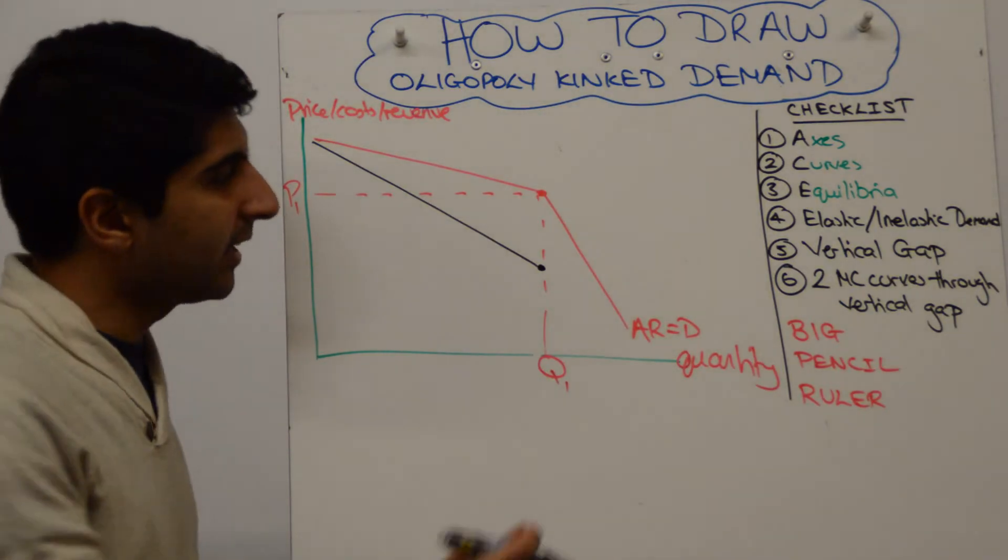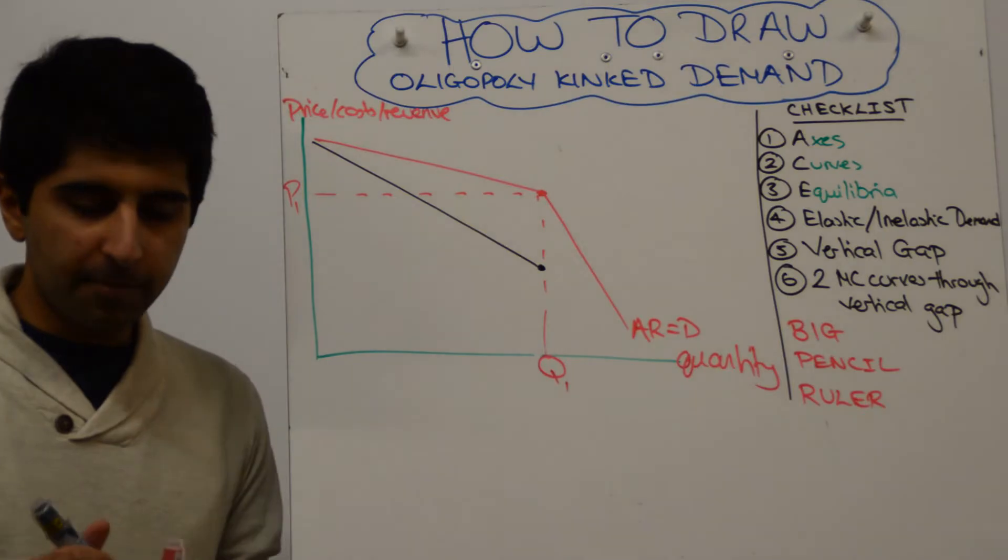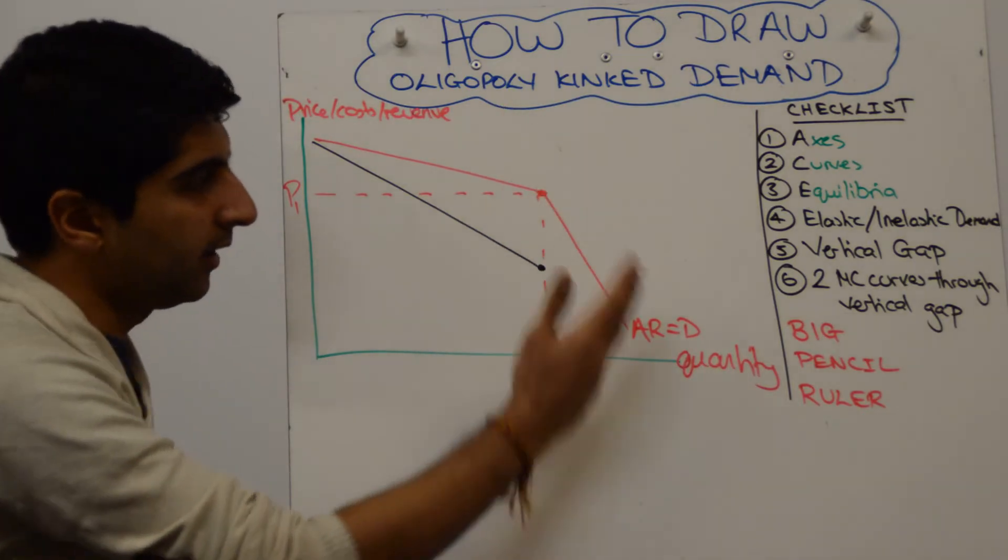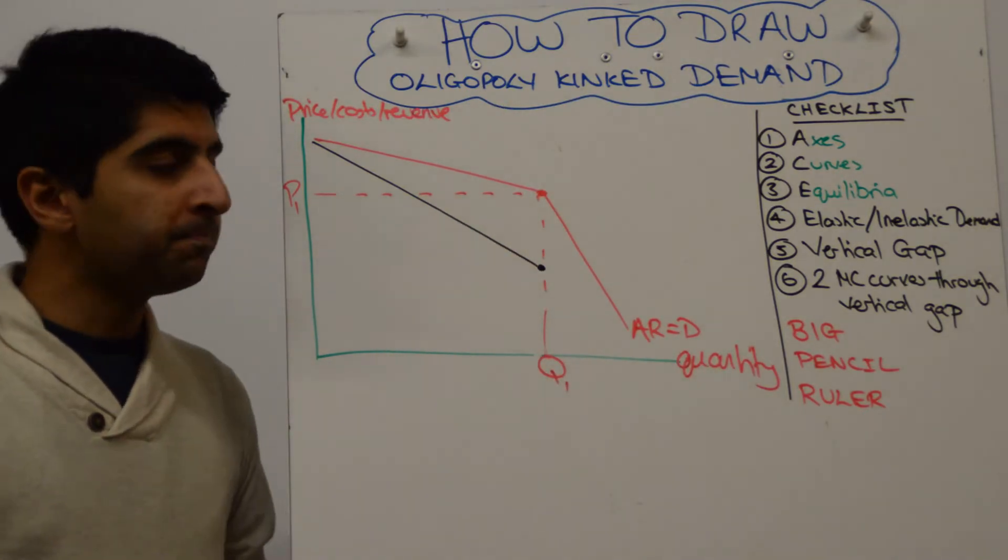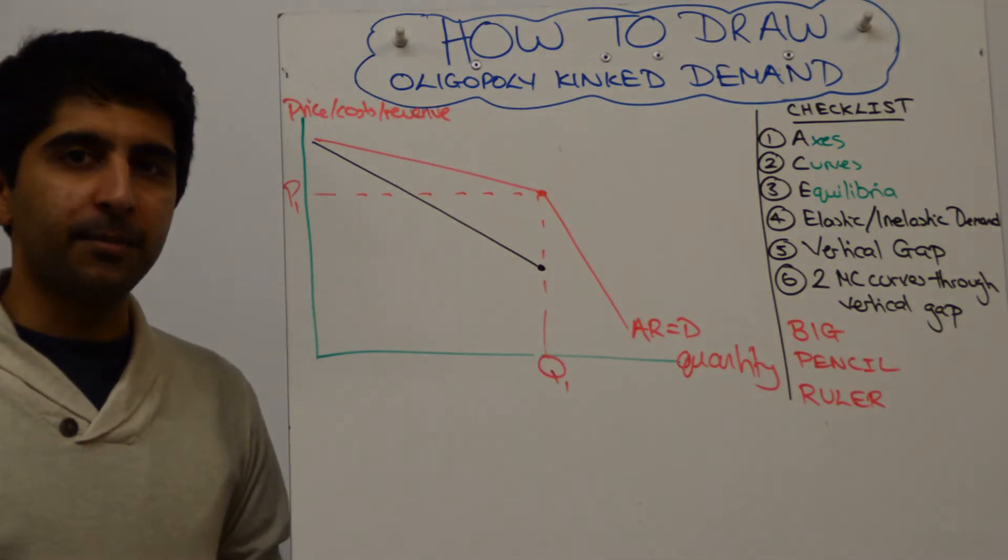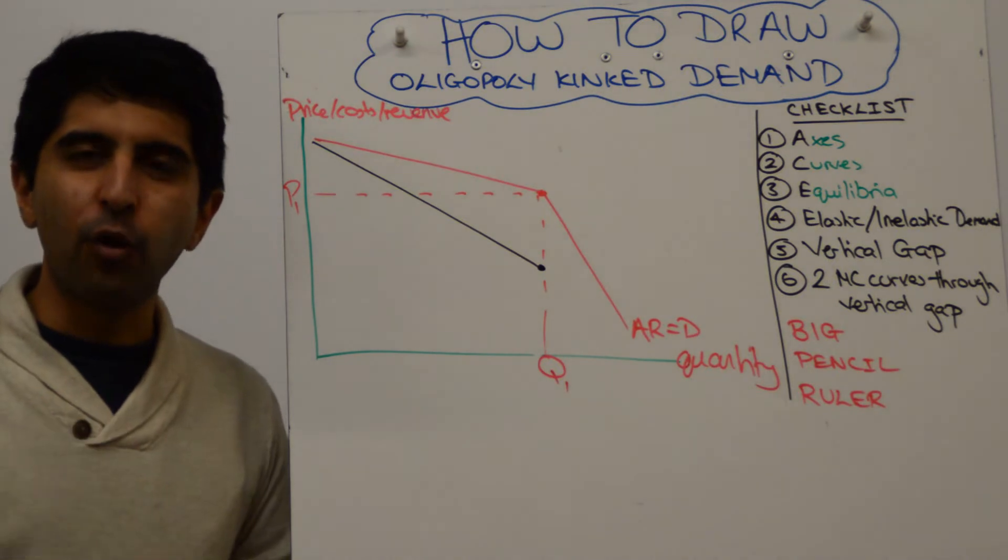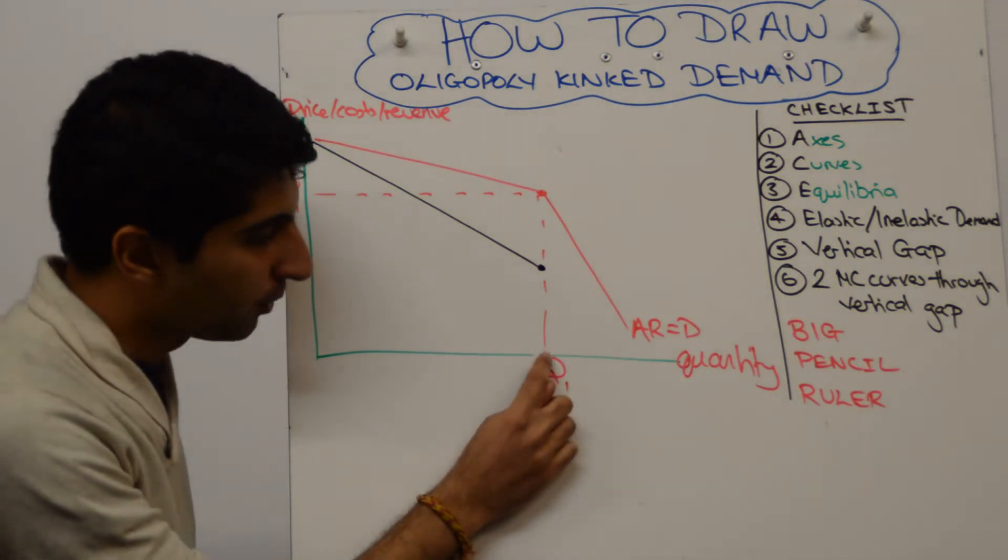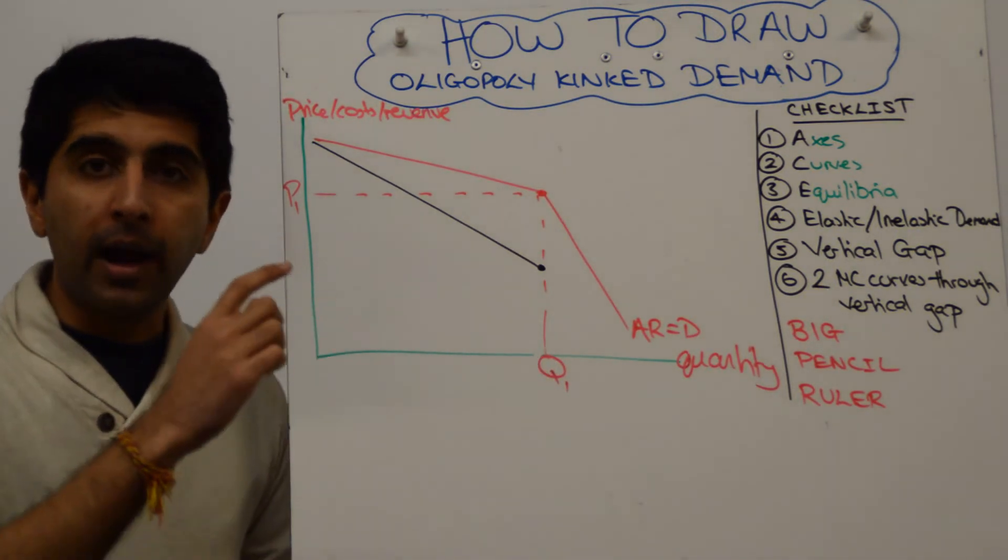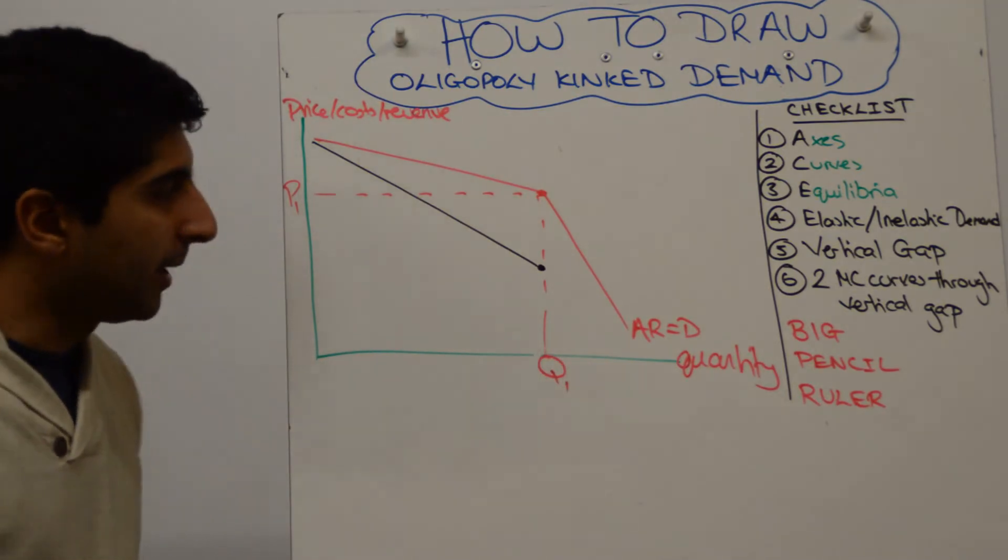Now being pedantic, the next part of the marginal revenue curve, so the second portion, the inelastic portion needs to start below the x-axis because if you lower the price when demand is inelastic there will be a fall in revenue. So marginal revenue has got to start at zero and then go negative to make that point clear.